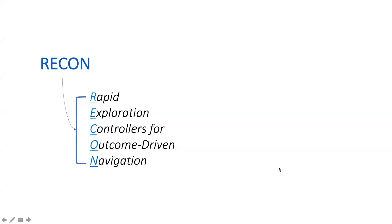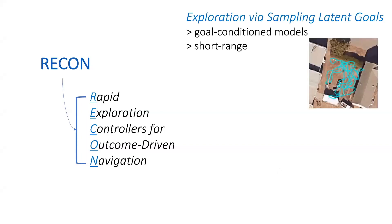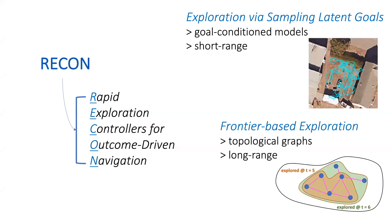RECON combines the strength of sampling-based exploration from the goal-conditioned model, which can provide general-purpose knowledge about navigational affordances and short-horizon control, with frontier-based exploration on a topological graph, which can be used to navigate distant goals. We find that our approach is able to rapidly explore and represent the information necessary for navigation without relying on spatial maps or visual SLAM, which can be computationally intensive.